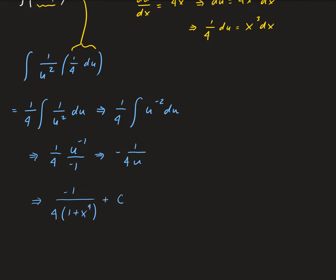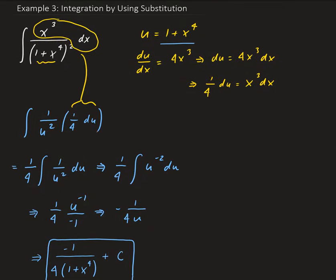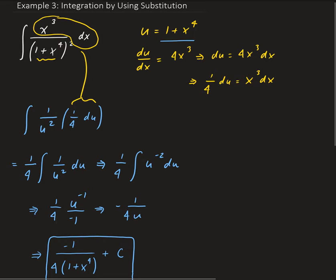Plus constant. So this is our solution. In other words, this is the antiderivative of our function. And this was done by using the substitution method for integration.